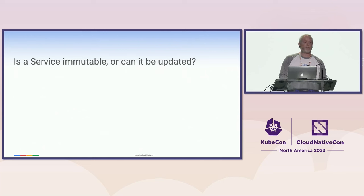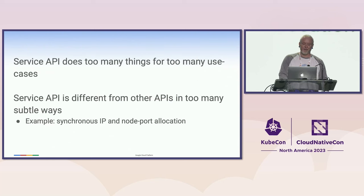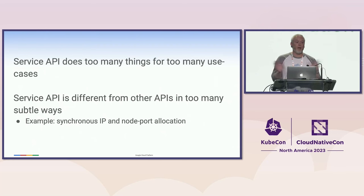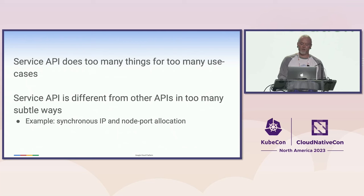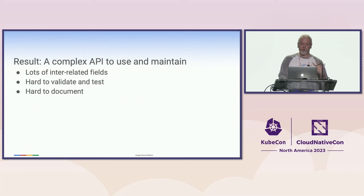Is a service actually immutable like we say it is, or can it be updated? We say that the cluster IP is immutable, but then we allow you to mutate it. The service API simply does too many things for too many people. We do things differently from everything else in Kubernetes — for example, we do synchronous allocation instead of doing it in a controller like everybody else. We also have a pseudo-transaction system built in, and until last year didn't even support finalizers properly. The result is a very complex API that is really just a tangle of fields with complicated interrelationships.